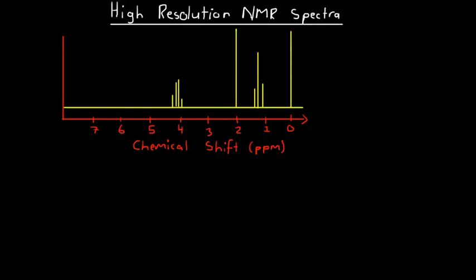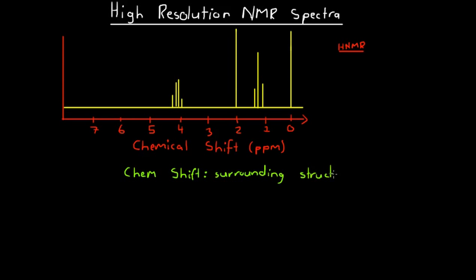Here we're going to look at how we analyze high-resolution NMR spectra. This idea of high-resolution spectra is only relevant when we're dealing with HNMR. If we're dealing with carbon nuclear magnetic resonance spectroscopy there's no high-resolution spectra, but when dealing with HNMR we do have this thing called high-resolution spectra. In low-resolution spectra we looked for chemical shift values, which gave us information about the surrounding structure of the hydrogens that caused a given peak, and we looked for height, which told us about the number of atoms that caused the peak.